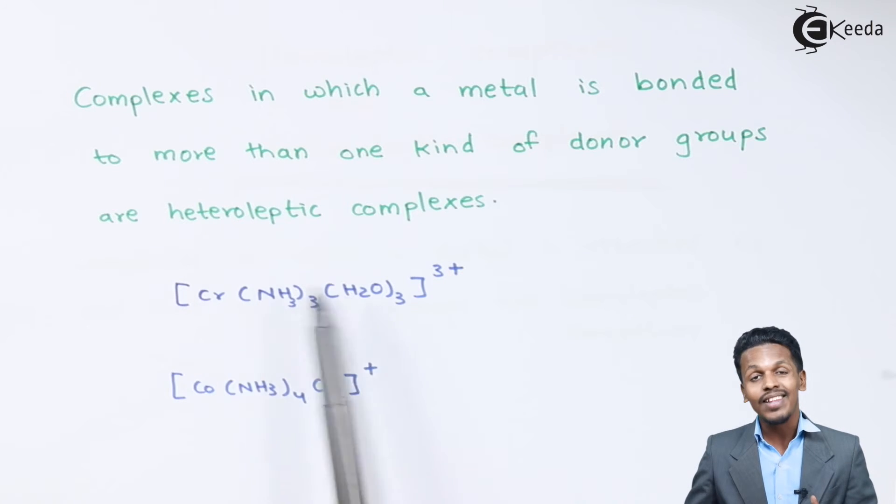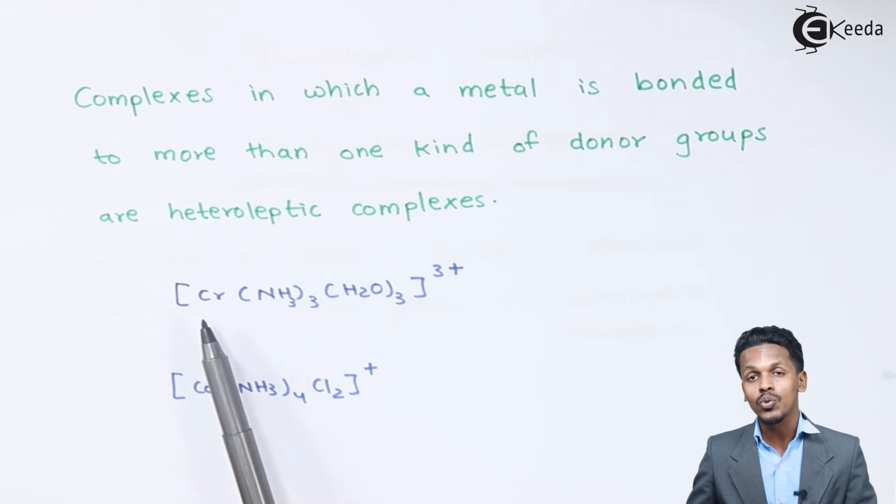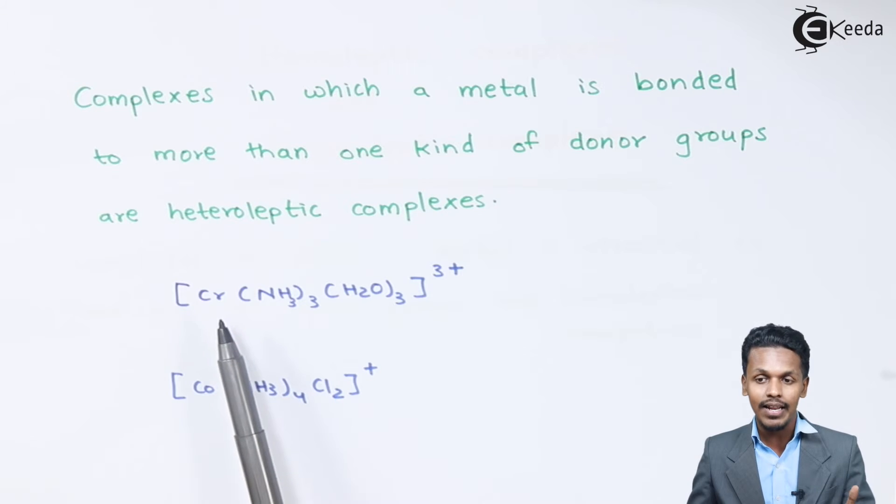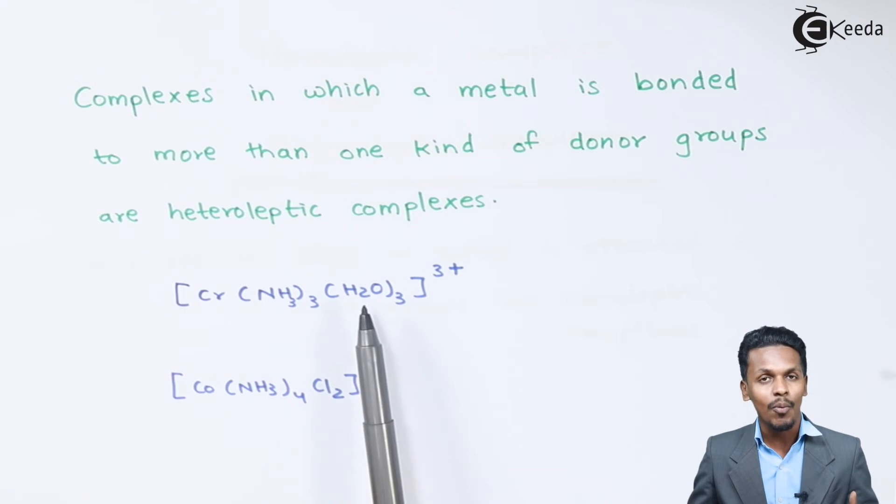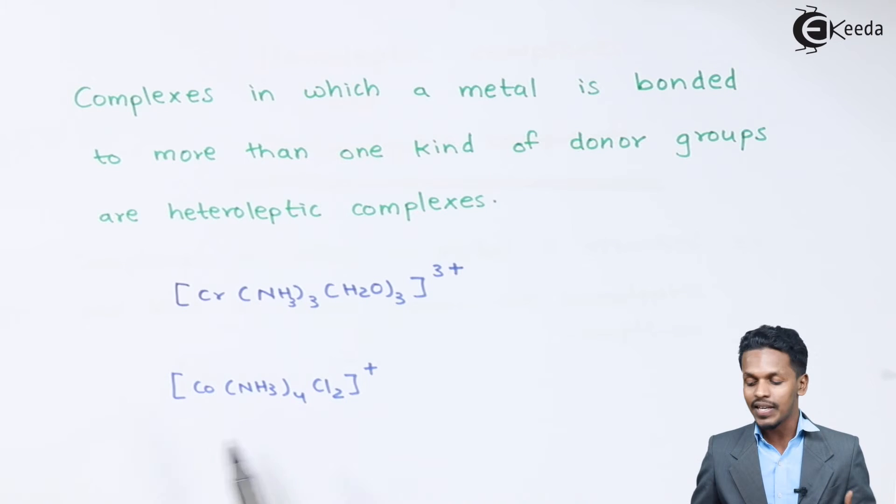Therefore these are two different ligands that are being attached to the same metal, that is chromium, and that's the reason this is known as a heteroleptic complex. Talking about the other example, in this case the two are different but they are attached to the same metal atom.